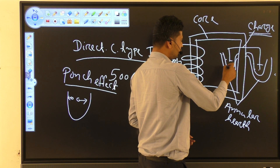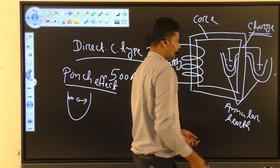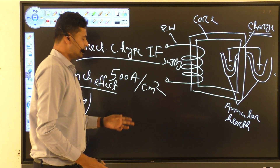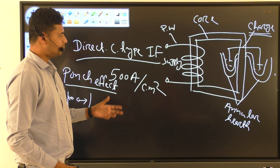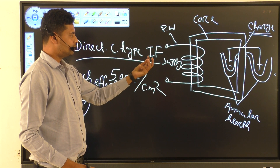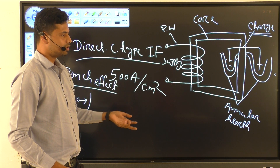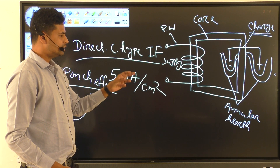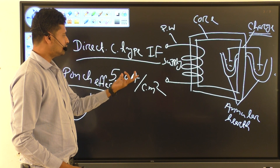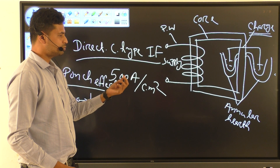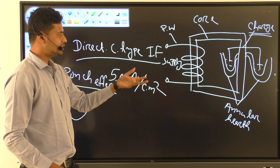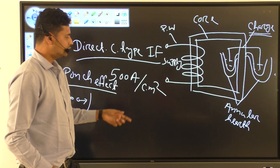In the annular hearth, the charge is melted. The first demerit of the direct core type induction furnace is that it cannot be operated without first pouring a small amount of molten metal or molten charge. This small amount of molten material is needed to create a short circuit so that the furnace can start. Without it, it cannot be started.